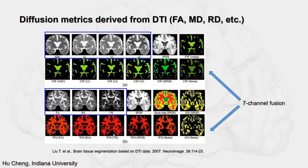Back in 2003, Neu et al. first applied seven-channel fusion on parameters derived from the diffusion tensor and showed reasonably good segmentation results. They used ADC and the eigenvectors of the diffusion tensor along with FA, RA, and VR. Together, the seven-channel fusion gives much better results than those using these parametric maps alone.